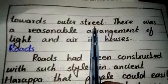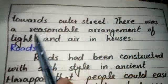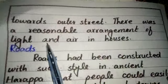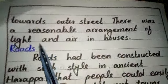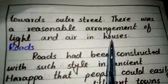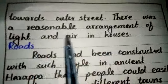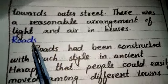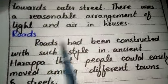The bathrooms were built towards the outer street. جو washroom تھے وہ گلی کے باہر کی جانب بنائے جاتے تھے۔ There was a reasonable arrangement of light in the houses. یعنی گھر کو کشادہ اور روشن دار بنایا جاتا تھا۔